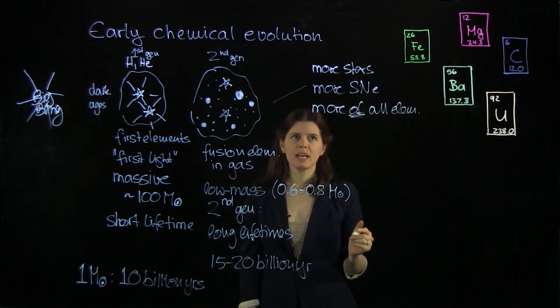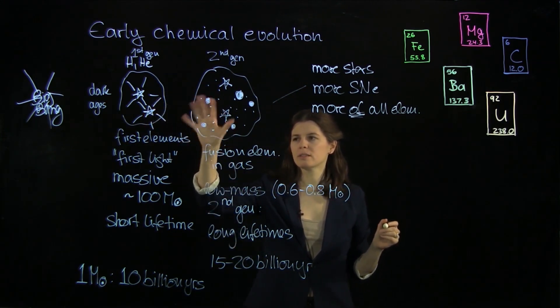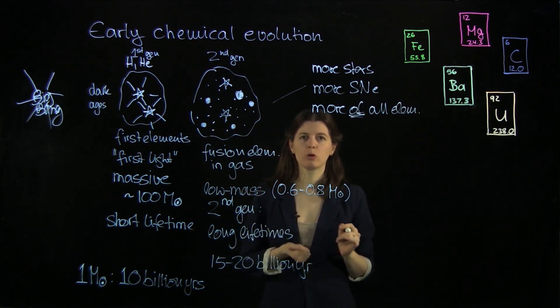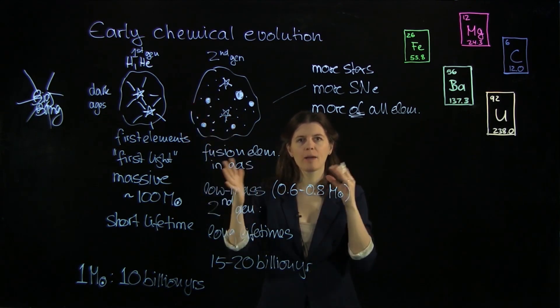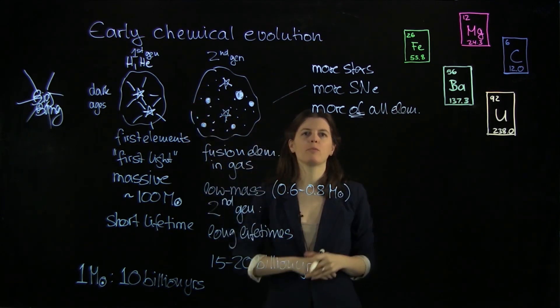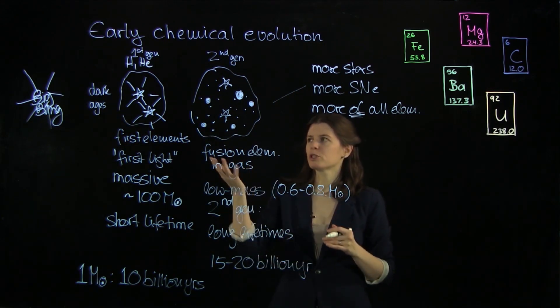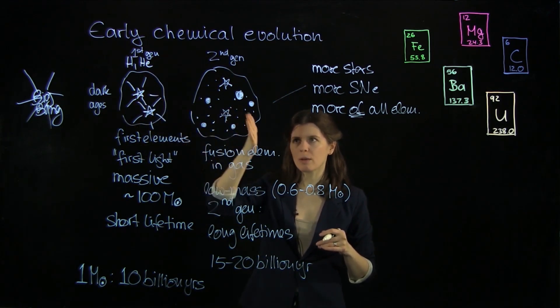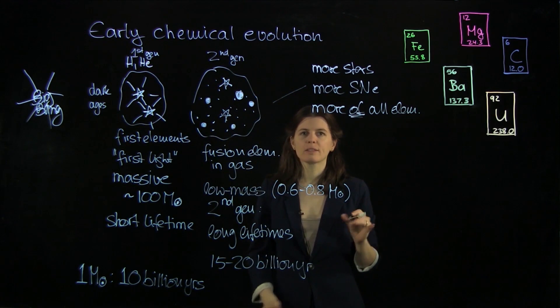Because as we will see later in some of these very early nuclear physics processes, all the elements from the periodic table could have been or were created already at the earliest times. Then with time more and more of all of them were created. It's not like that the universe because it was just hydrogen and helium in the beginning then it took time to build up all the elements and march through the periodic table with time. That is not the case.